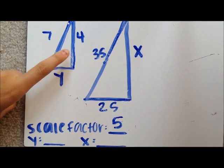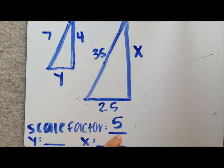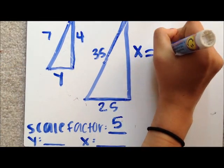So you do 4 times 5 is 20. So you know X equals 20.